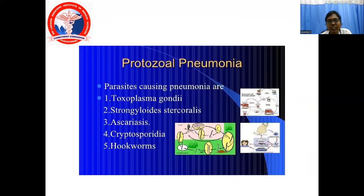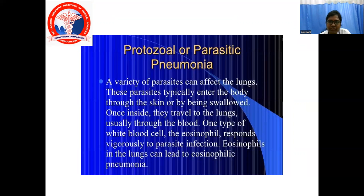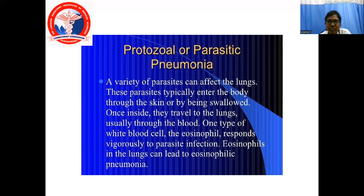Protozoal pneumonia: parasites causing protozoal pneumonia include Toxoplasma gondii, Strongyloides stercoralis, Ascariasis, Cryptosporidia, and others. A variety of parasites can affect the lung. These parasites typically enter the body through the skin or by being swallowed, and then travel through the lung, usually also through the brain. One type of white blood cell — eosinophils — responds vigorously to parasite infection in the lung. Eosinophilia in the lung will lead to eosinophilic pneumonia.